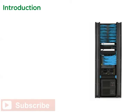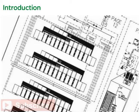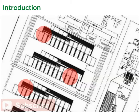High density equipment, such as blade servers, 1U servers, and multi-core high-end servers, provide more computing per watt compared to previous generation servers. However, when consolidated, this new generation of equipment requires concentrated power and cooling resources.